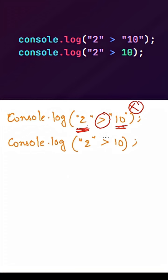In the second line we are using a comparison operator between a string and a number. So JavaScript engine will convert this string into a number 2, so our expression will become 2 is greater than 10 which will return false.